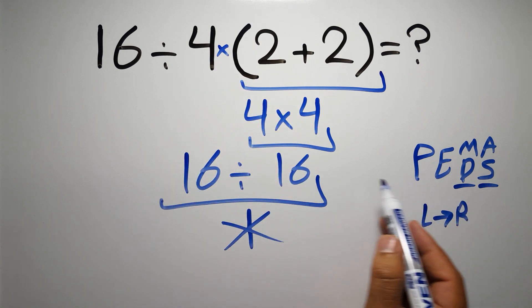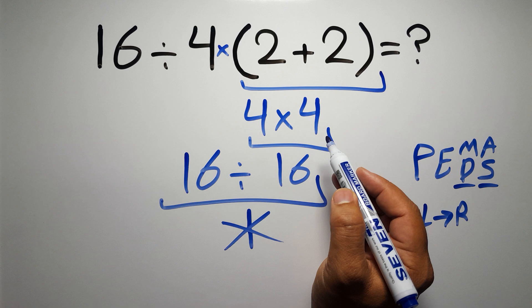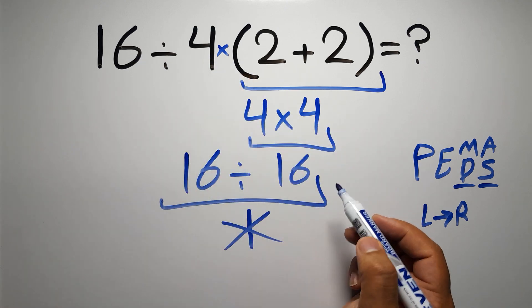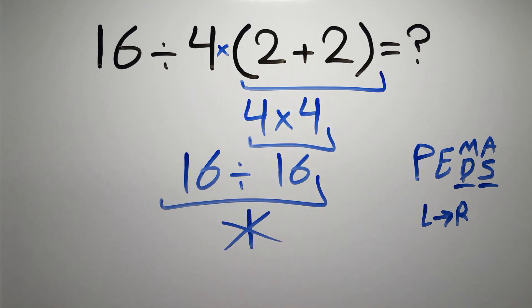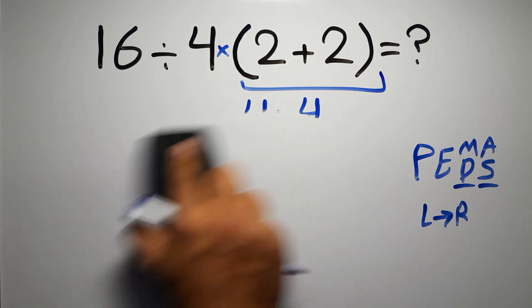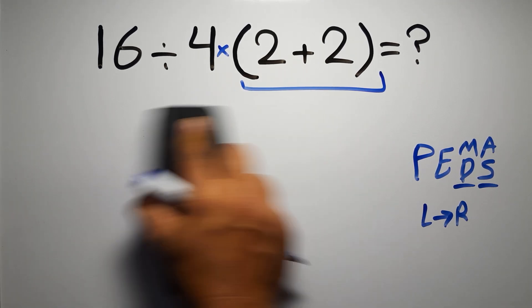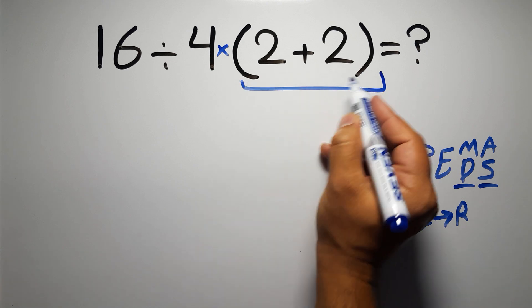Okay, so according to the PEMDAS, first we have to do this parentheses, then this division, and finally this multiplication. If we do this multiplication before this division, it is wrong. So first, this parentheses.